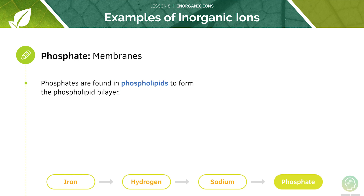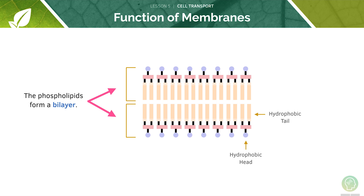Phospholipids are key components of cell membranes, forming the phospholipid bilayer. This diagram shows how a cell membrane is structured. We will go into more detail in a later tutorial.